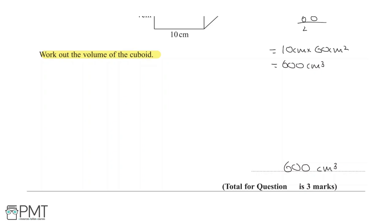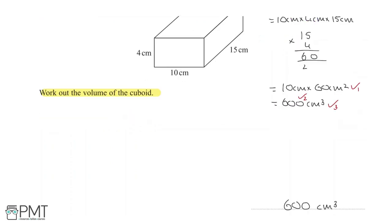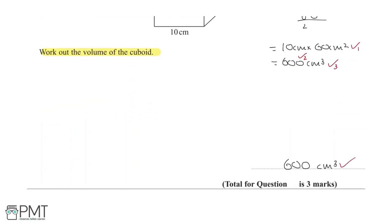This question is worth three marks. The first mark comes from a complete method to find 4 × 10 × 15. The second mark comes from getting 600. The third mark comes from writing the correct units of centimetres cubed — effectively the correct final answer.